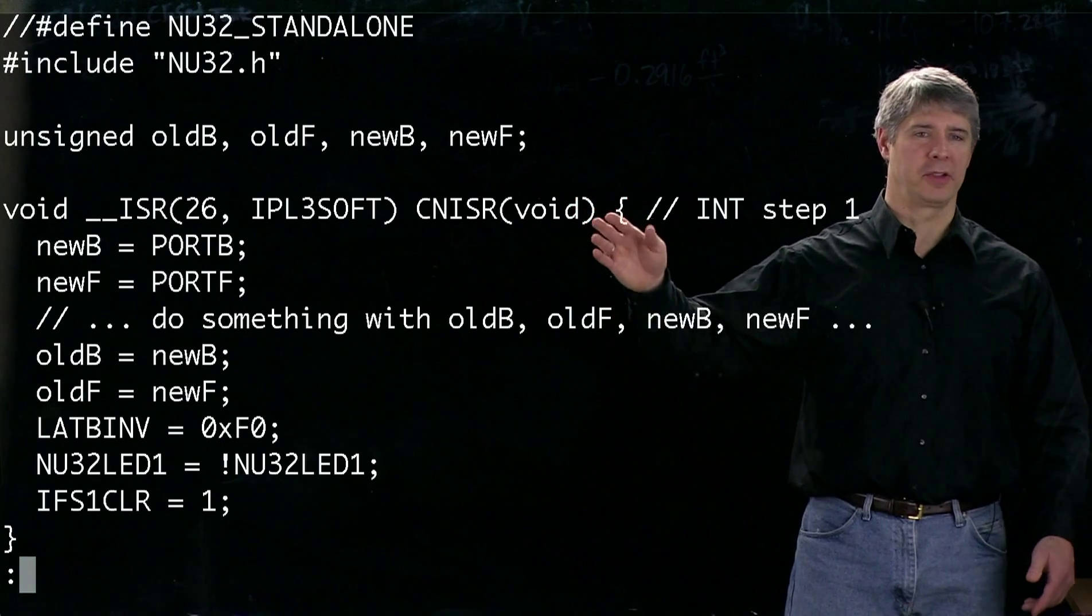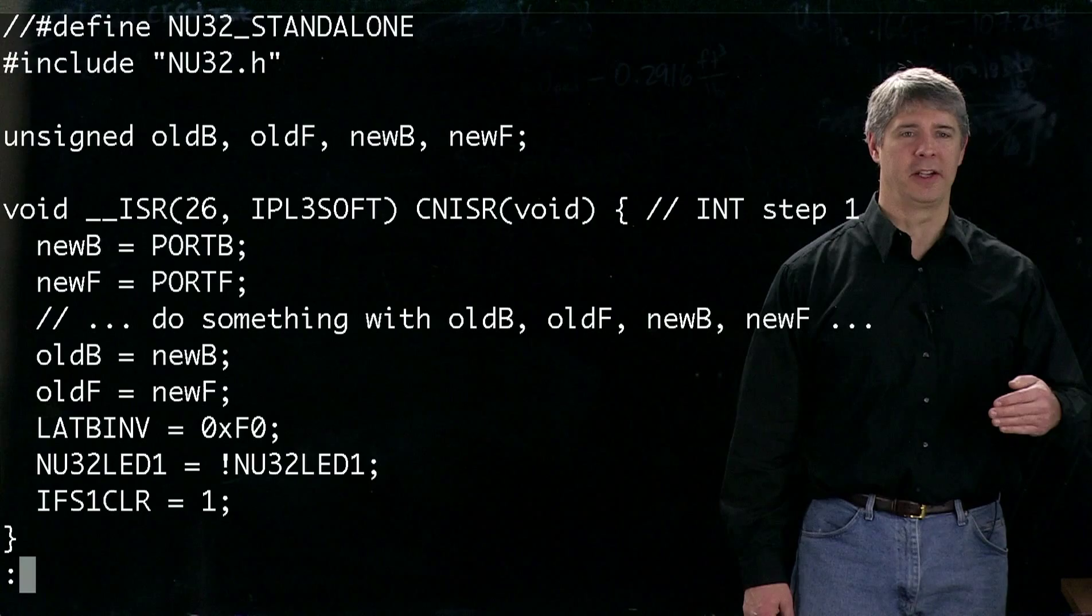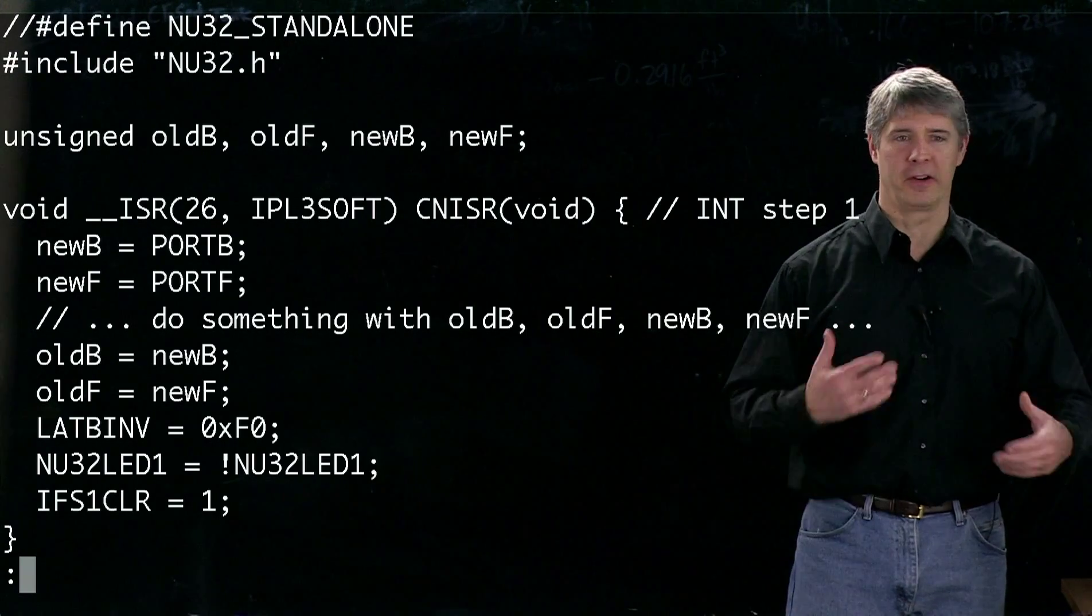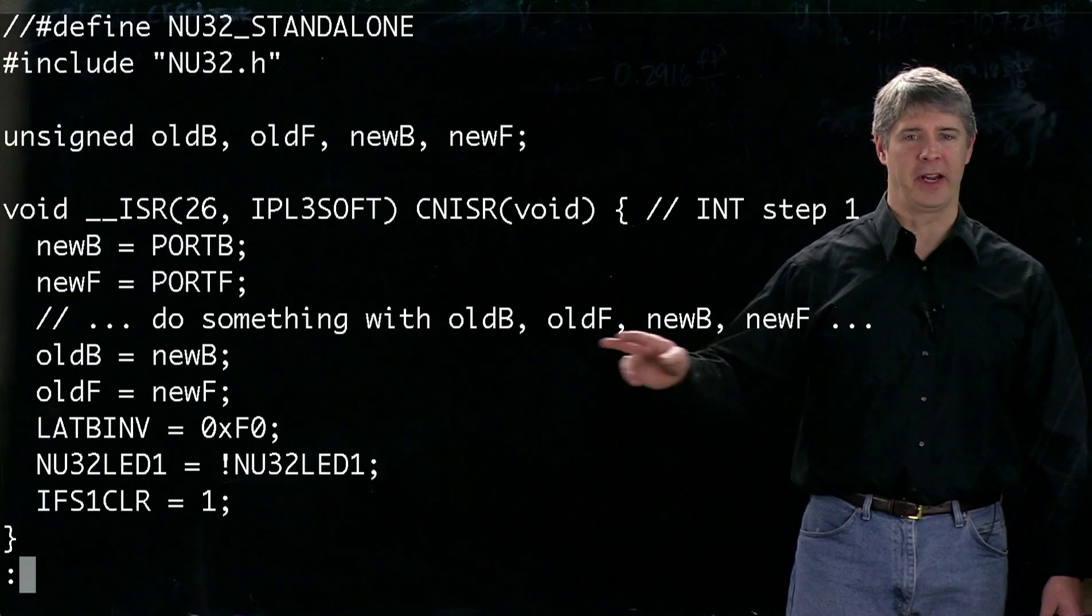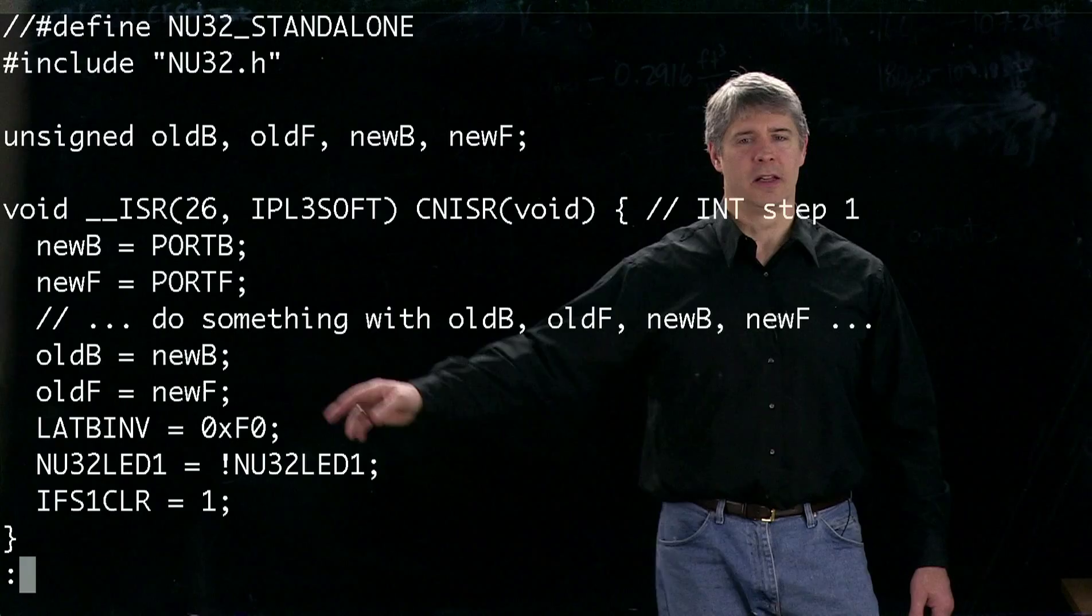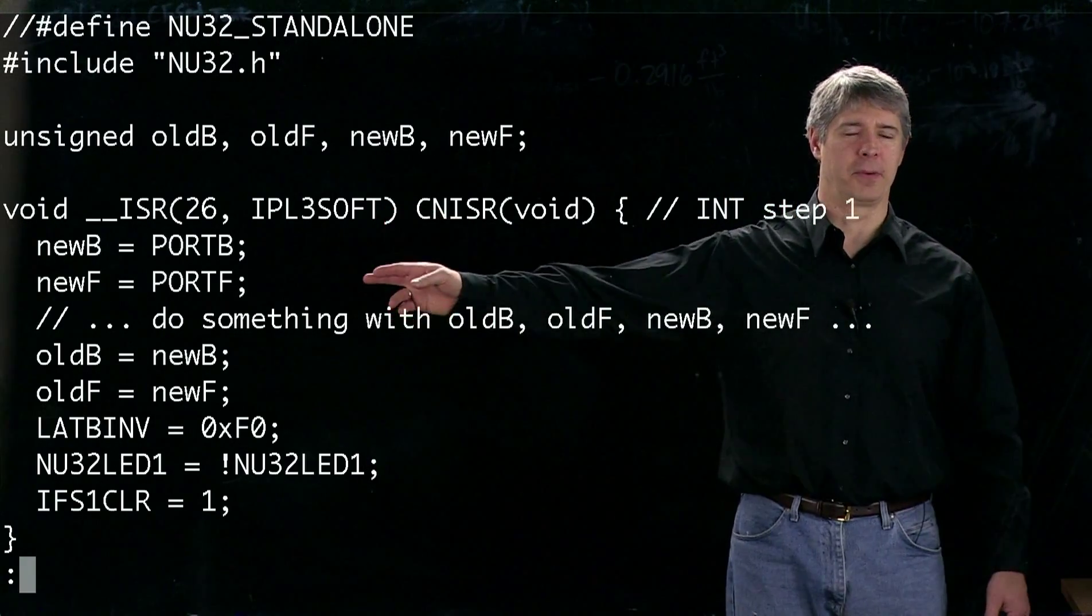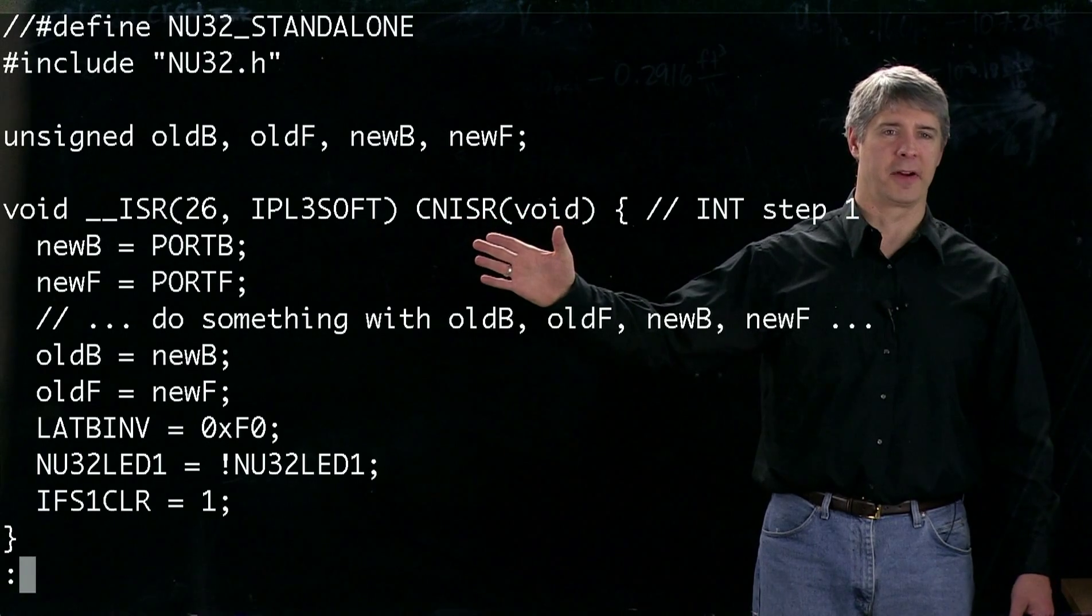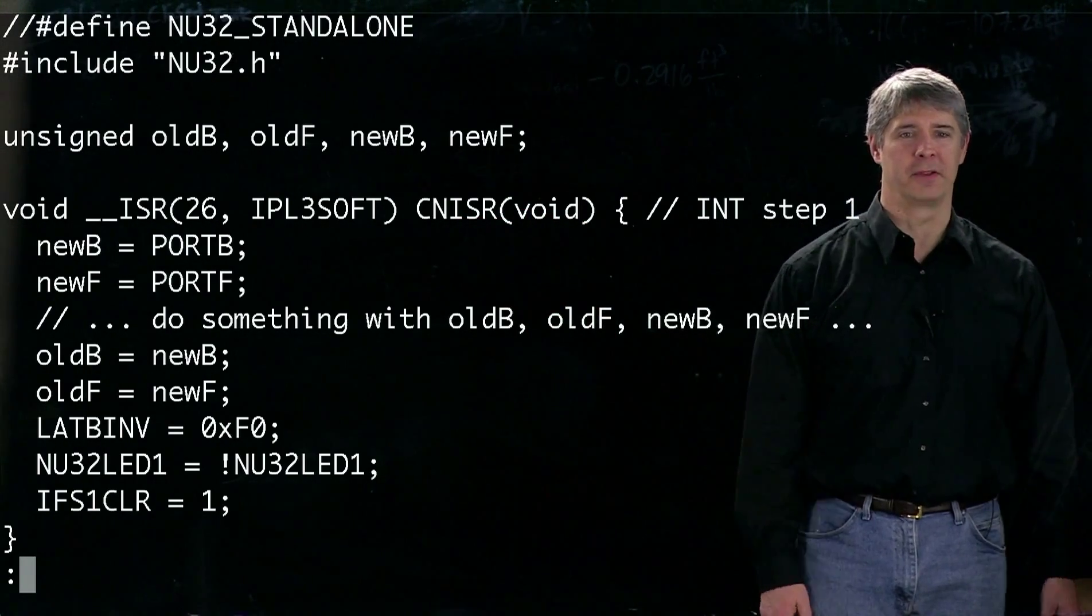All we know when we jump to this routine is that one of those pins has changed. By comparing newB and newF to oldB and oldF, we can figure out which pin actually generated the interrupt and take appropriate action. Next, we set oldB and oldF to the values we just read from port B and port F, so the next time we enter this interrupt service routine, we're comparing to the right old values.